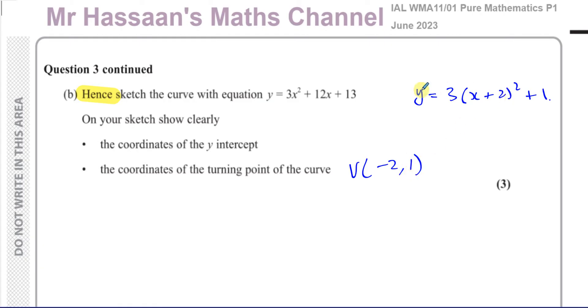So the minimum value, the minimum value of this is y = 1. That's the lowest it can ever go. So if the lowest it can go is 1, that means it will never touch the x-axis, and the x-coordinate of the minimum is -2.